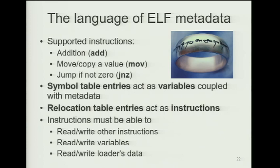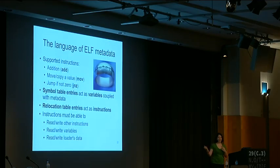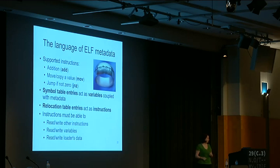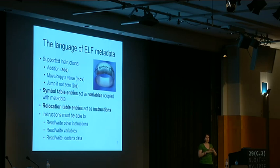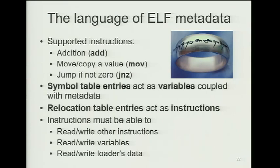Symbol table entries act as variables — like memory-mapped registers — and relocation entries act as instructions. To have the full power of the weird machine, you need to be able to read and write other relocation entries (other instructions), other symbols (variables), and the loader's data — the link map data shown earlier. At a high level, operands have a destination and an instruction. All destinations are specified directly. For operands, depending on the instruction there are different addressing modes: direct (value specified right in the entry), variable (using a symbol index to look up the symbol's value), or variable-indirect (the symbol's value is an address from which you read the actual value).